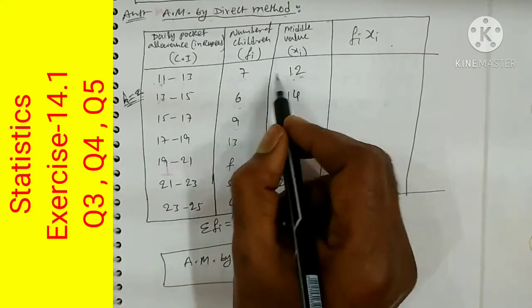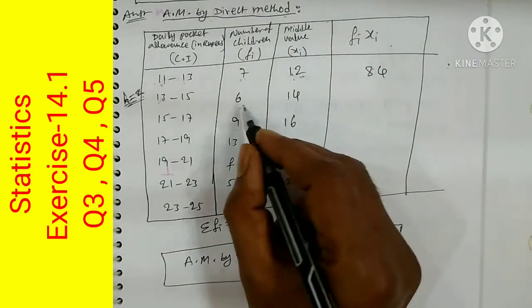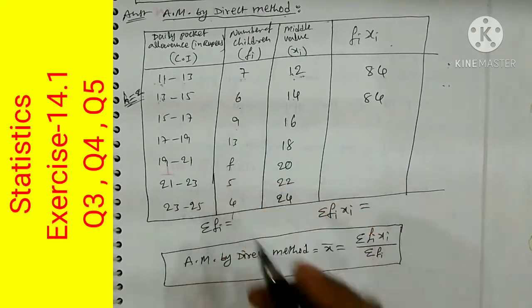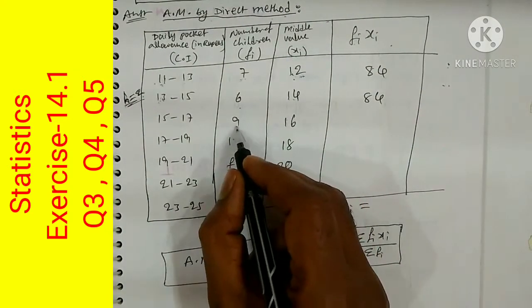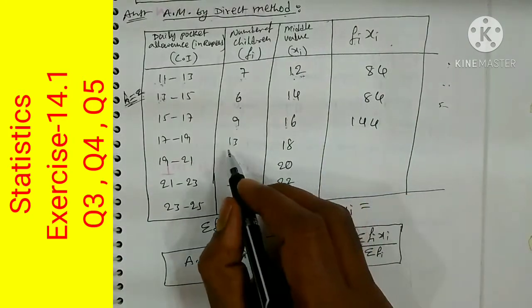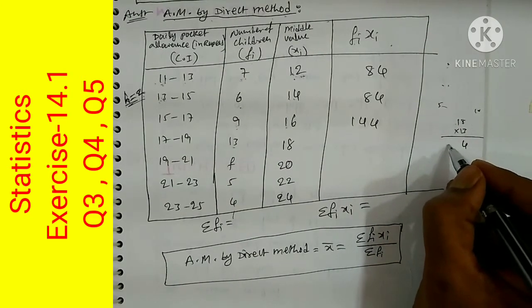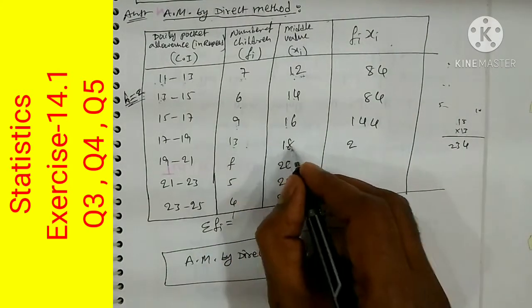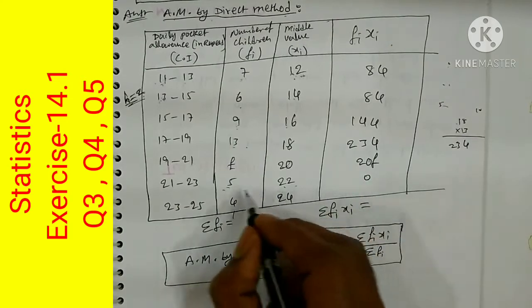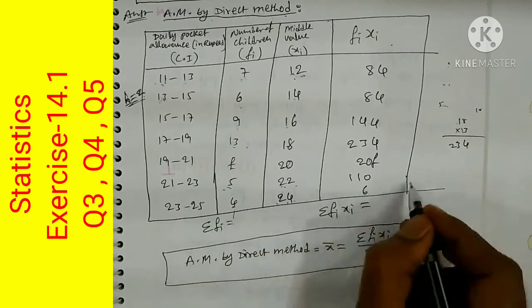Now we compute Fi·Xi by multiplying frequency and middle value for each class: 7×12=84, 6×14=84 (approximately), 9×16=144 (54 for one row), 13×18=234, F×20=20F, 5×22=110, 4×24=96. The unknown term 20F is kept separate and the remaining products are added up to give a numerical total of 752.